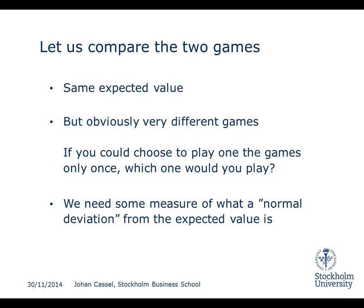So one thing we might need to evaluate games is to measure what a normal deviation from the expected value is. In both cases the expected value was 61.54, but in both games that number could never actually happen — either you won a lot of money or you lost a little bit. So we would like to know what is a normal deviation from this expectation.